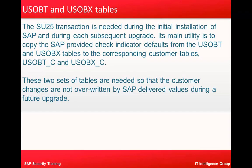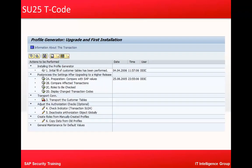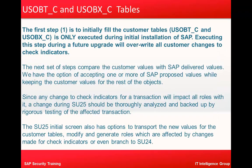These two sets of tables are needed so that customer changes are not overwritten by SAP-delivered values during a future upgrade. The USOBT and USOBX tables are maintained by SAP, and during any upgrade SAP modifies those tables. The customer-specific values are stored in the corresponding tables with a suffix of underscore C.